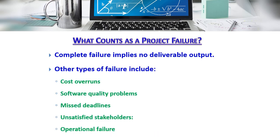What counts as a project failure? Complete failure implies no deliverable output. Other types of failure include cost overrun, software quality problems, missed deadlines, unsatisfied stakeholders, and operational failure.